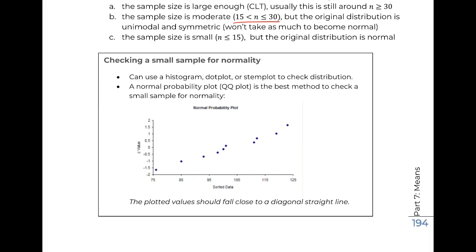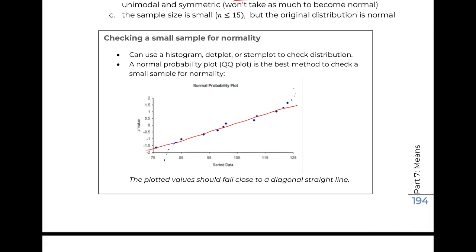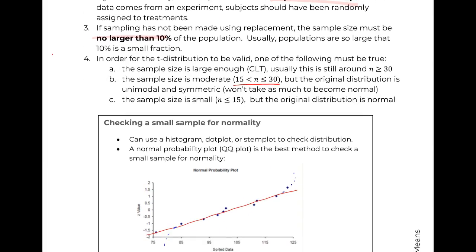Same idea, but now we're getting a little more nitpicky. You do need to have normality. Ways you can check normality: you can make a histogram, dot plot or stem plot to look at your sample. You can also make what's called a Q-Q plot. All your data values should fall pretty much on the diagonal line. If they don't, the most common thing is that you'll start seeing the things tail off like that to either side. And that would be an indication that your data is not normal and that you need a larger sample size.